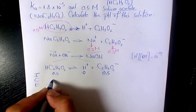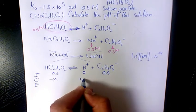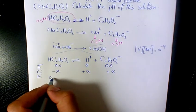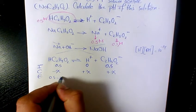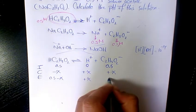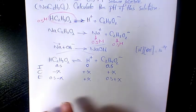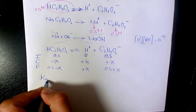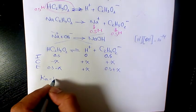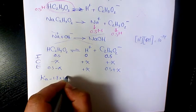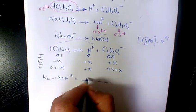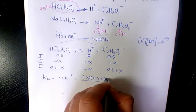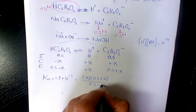For the change row, we have negative X, plus X, and plus X. So at equilibrium, we have 0.5 minus X for acetic acid, X for the proton, and 0.5 plus X for acetate. I can write the dissociation constant Ka, which is 1.8 times 10 to the power of negative 5, equals X times (0.5 plus X) divided by (0.5 minus X).